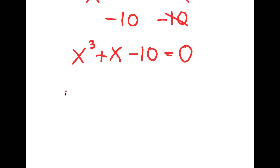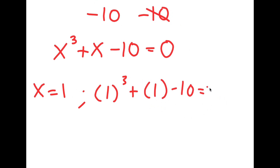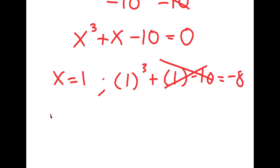Let's start with x equals 1. When x equals 1, I get 1 to the power of 3 plus 1 minus 10, and this is equal to negative 8, which does not equal 0. This is wrong.